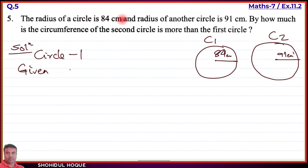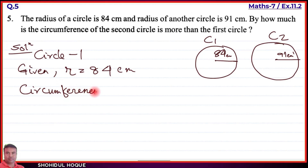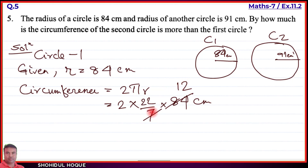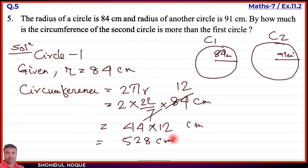For circle 1: given radius r equals 84 cm. The circumference formula is: circumference equals 2 pi r. Using pi equals 22 by 7: circumference equals 2 into 22 by 7 into 84. Dividing 84 by 7 gives 12, so circumference equals 2 into 22 into 12, which equals 44 into 12 equals 528 centimeter.